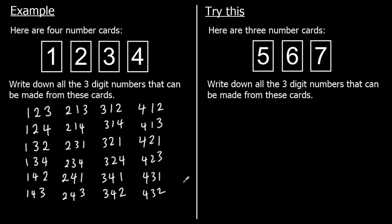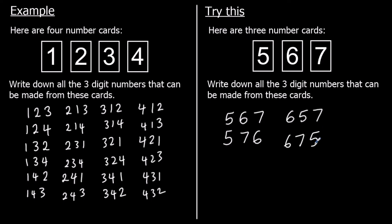There's an easier one for you to try. There are only three number cards — write down all the different three-digit numbers that can be made from these cards. We could have five hundreds: if we've got six in the tens, that means we've got seven in the ones; the other option is seven in the tens and six in the ones. With six hundred, we could have five in the tens and seven in the ones, or seven in the tens and five in the ones. And if we start with seven hundred, we could have seven hundred and fifty six or seven hundred and sixty five.